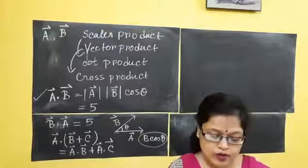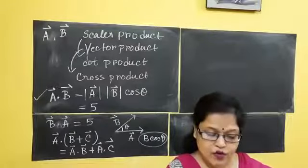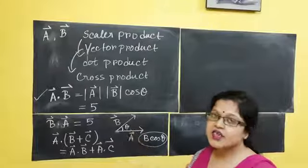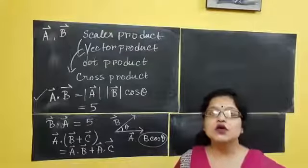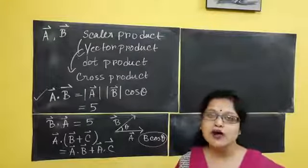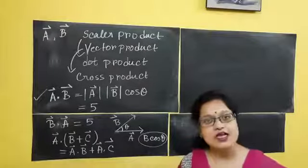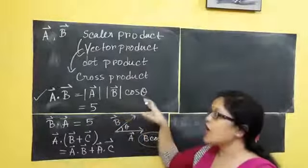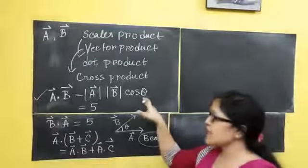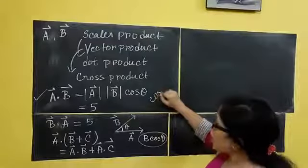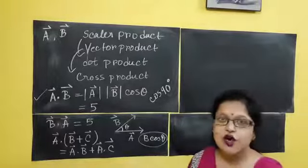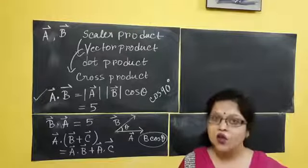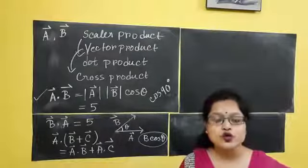The next property: scalar product of two mutually perpendicular vectors is 0. If the angle between two vectors theta is 90 degrees, then scalar product is 0. Because A dot B equals magnitude of A, magnitude of B, cos theta, and if the angle is 90 degrees, cos 90 equals 0. Therefore if two vectors are mutually perpendicular to each other, the scalar product between them gives 0.